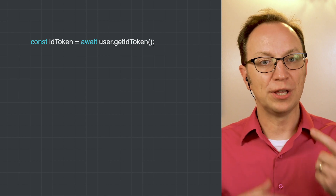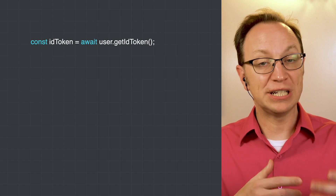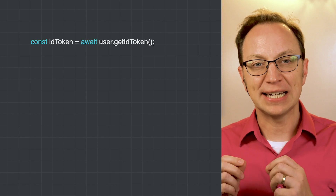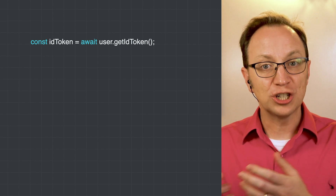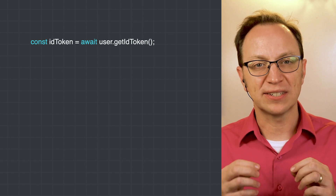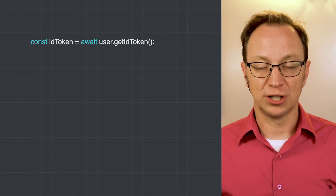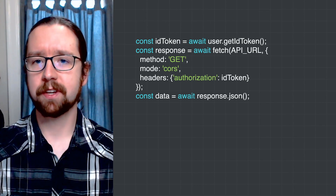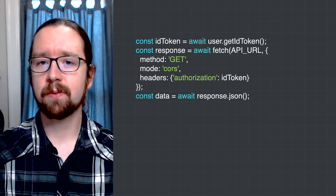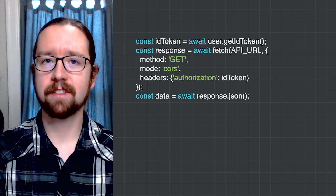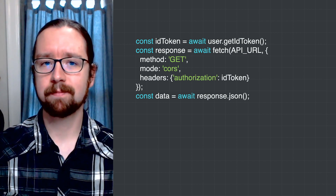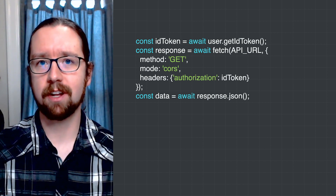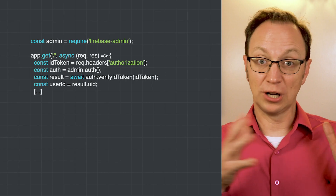On the next page — the one that users are redirected to when they log in successfully — Anna calls getIDToken. The string she gets back is a signed JSON Web Token, which contains the user's unique ID. After fetching the ID token, Anna's code requests the user's hikes by calling the server-side REST API. Her code includes the ID token in the authorization header of the call.